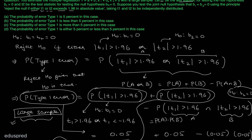So the probability of Type 1 error is 9.75%, which means the right answer is part C: the probability of Type 1 error is more than 5% in this case. That's all for this question.